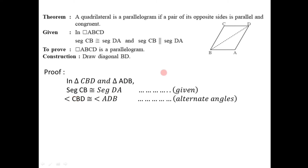The second constituent is angle CBD and angle ADB. These two angles are alternate angles, and it is given that CB is parallel to DA. If these two lines are parallel and we consider BD as the transversal, then these two angles are alternate angles. We know that if two lines are parallel then the alternate angles formed are congruent. That's why angle CBD is congruent to angle ADB — this is the second constituent.